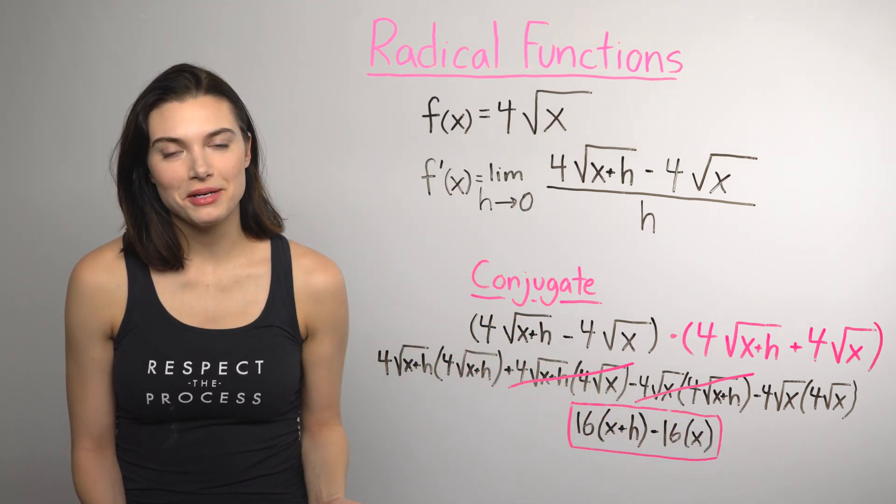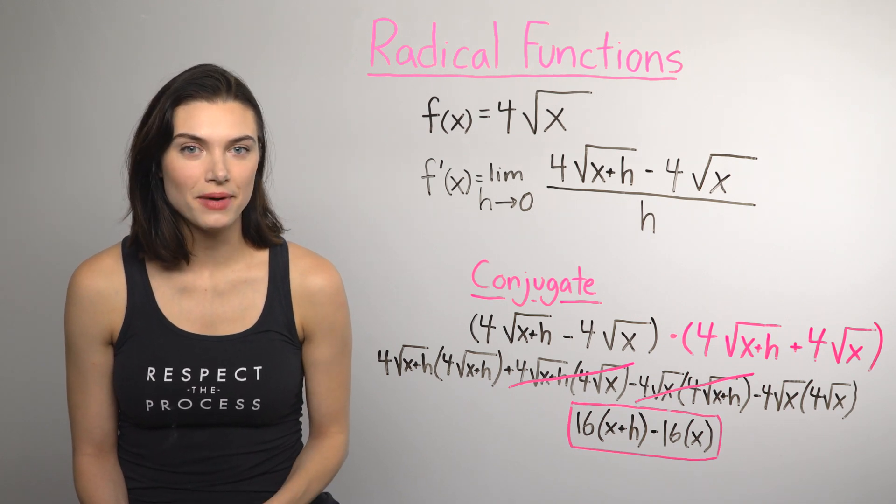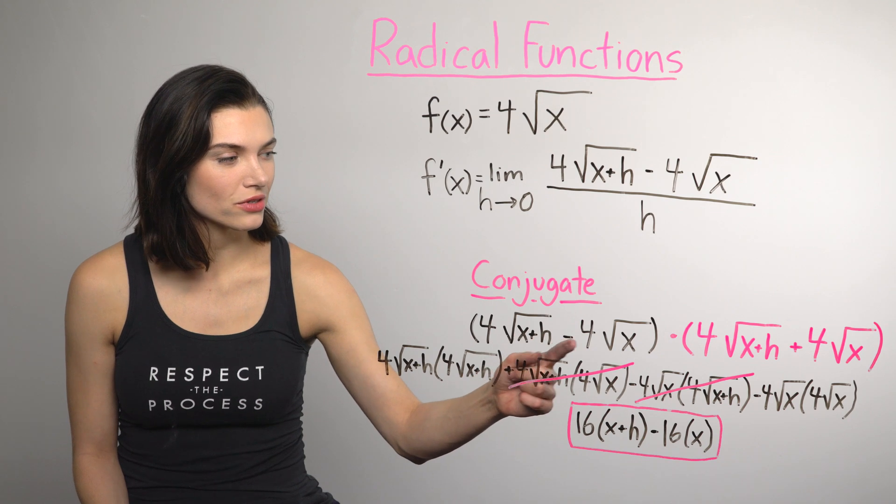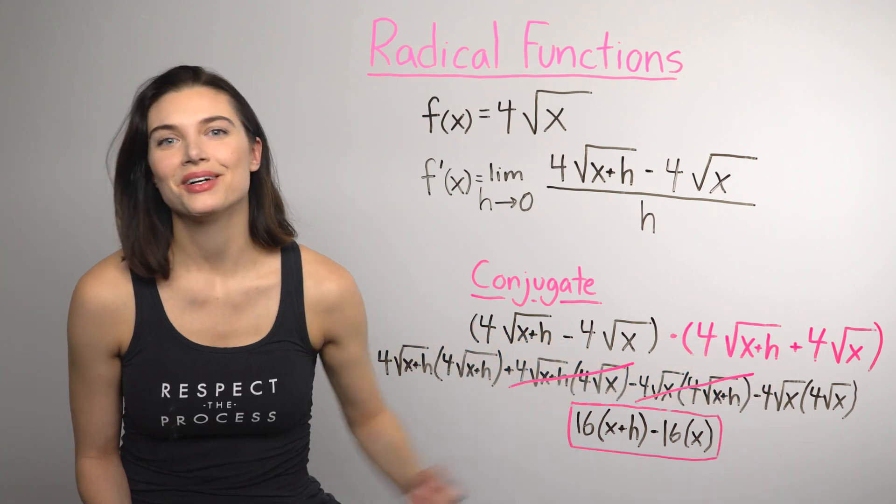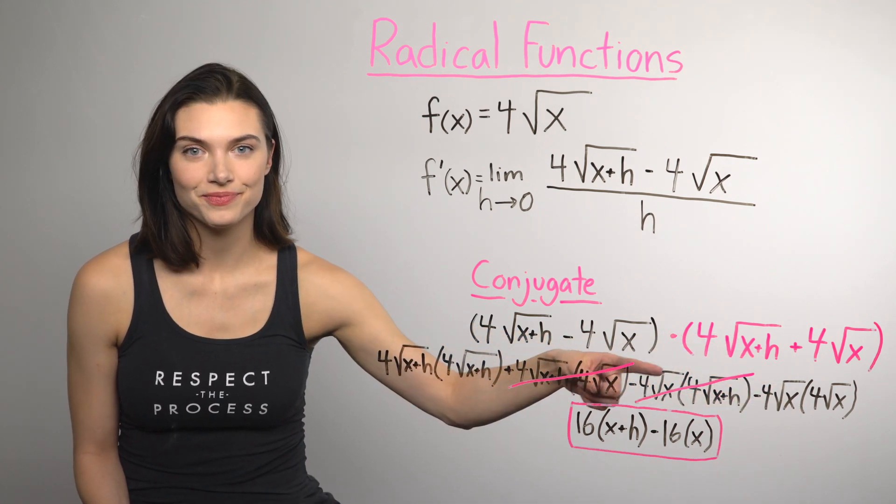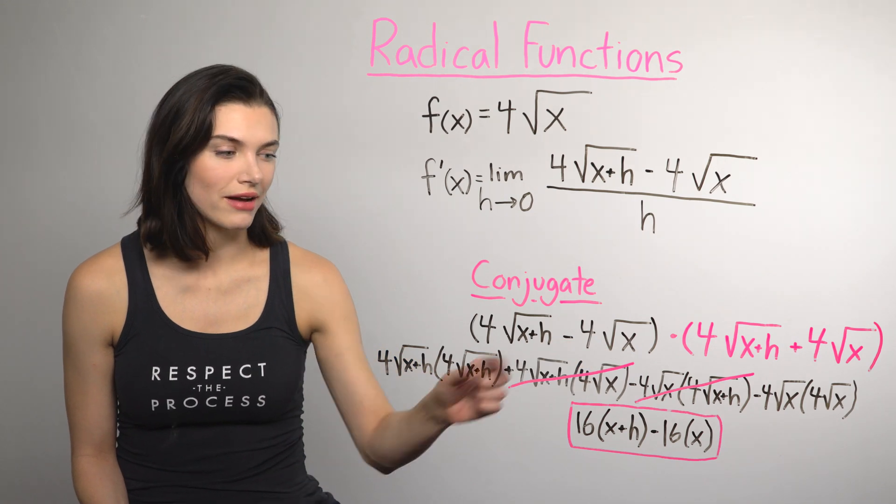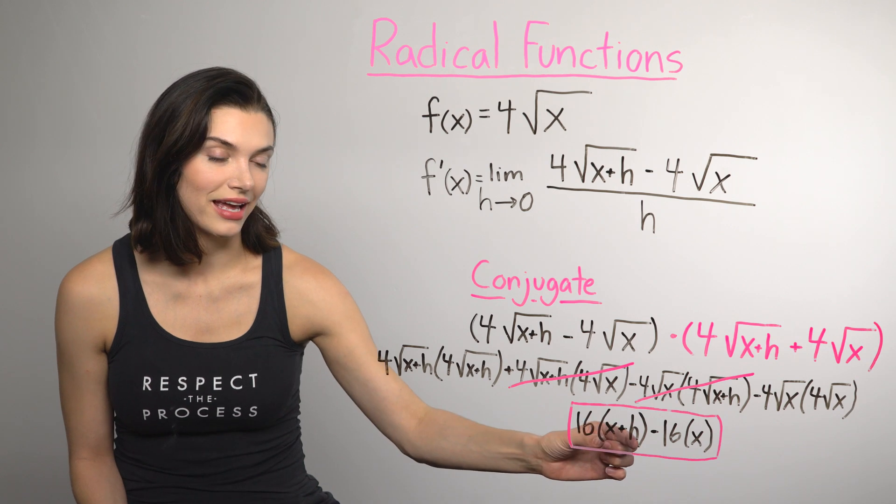If you forgot everything about a conjugate, I'll show you quickly how it works. The conjugate is the same binomial, except the sign in the middle of the terms is flipped. Use the FOIL method to multiply it out. What's nice is with a conjugate, the middle terms always cancel out. Also, when multiplying a radical by itself, the radical goes away and you're just left with a radicand.